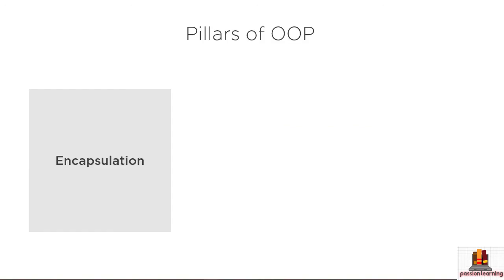In software, there are what we call the three pillars of object-oriented programming. These are the concepts that OOP languages support with different language features. One pillar is encapsulation, which we've already talked about. Encapsulation allows us to hide details about our code. Methods, properties, and access modifiers like public and private give us explicit control over encapsulation and who sees the members of a class.